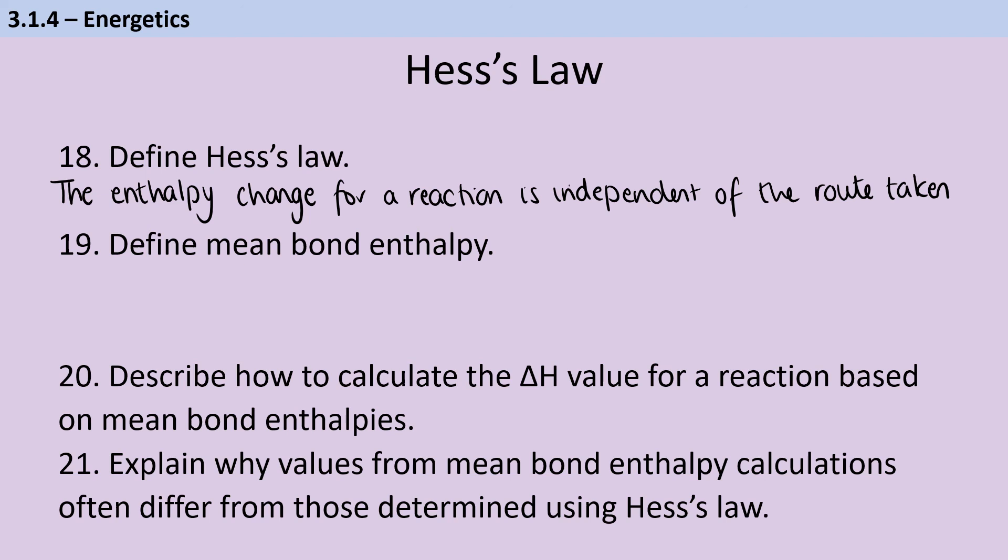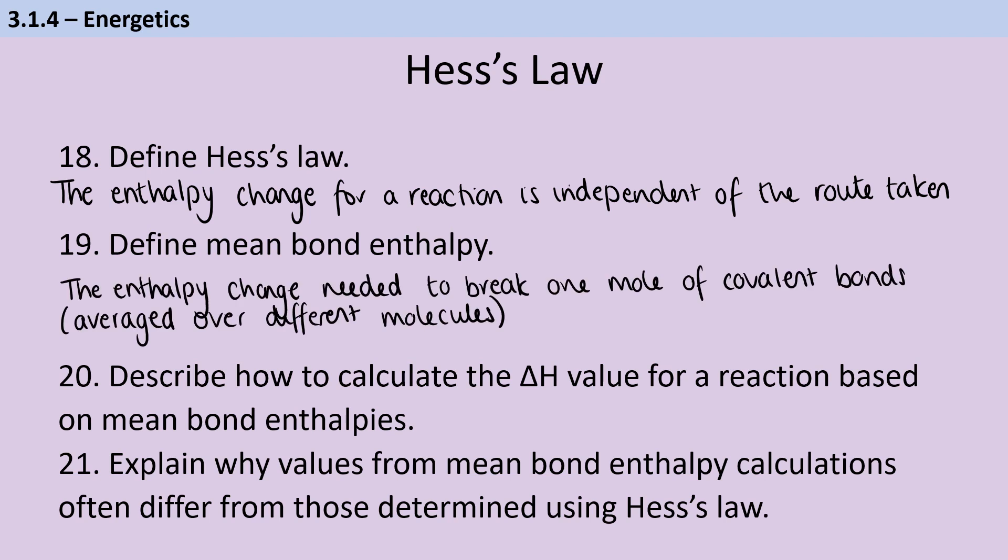In other words, once you've drawn your Hess's cycle, it doesn't matter which way around you go. As long as you go from the same start point to the same end point, the enthalpy change will be the same. Mean bond enthalpy is a number that's produced by looking at lots of different compounds that all contain the same kind of covalent bond and working out how much energy is required to break one mole of that covalent bond on average. So the enthalpy change needed to break one mole of covalent bonds.